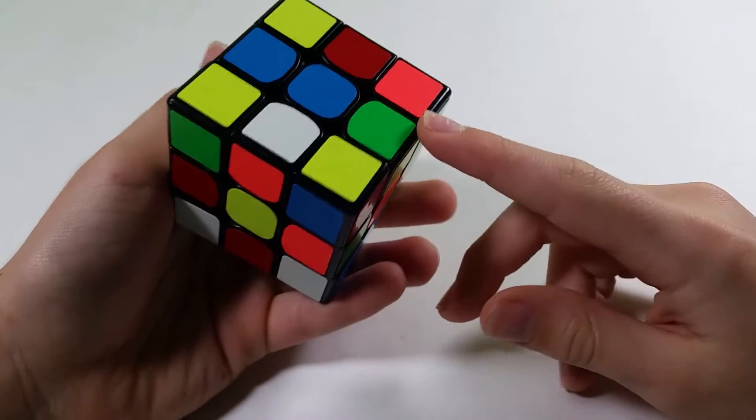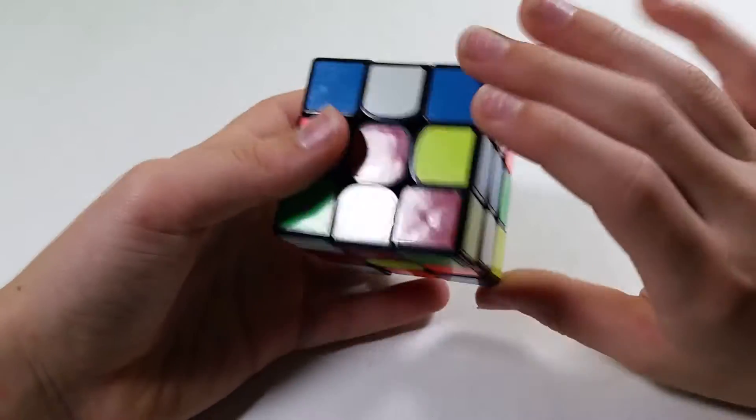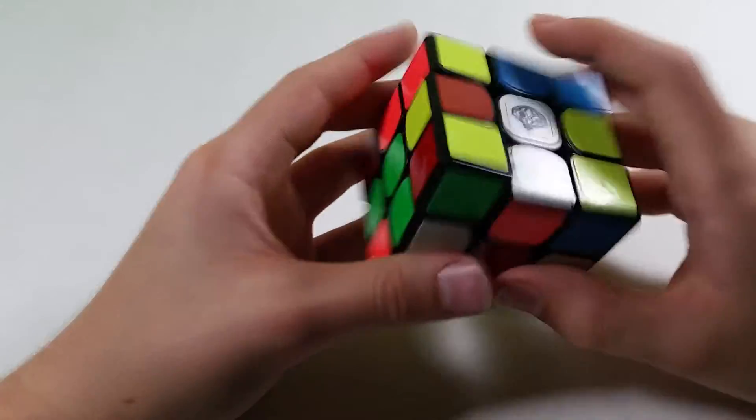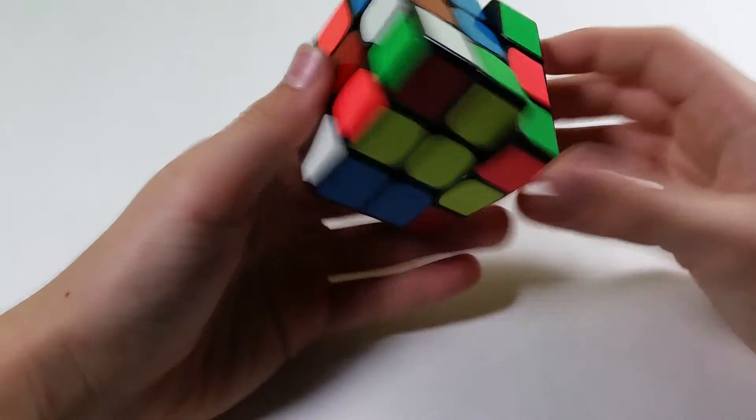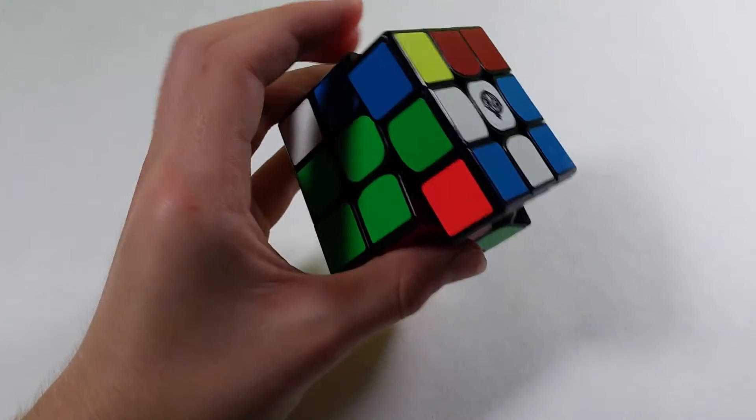You can solve it by bringing these two down opposite of their center with R, F', inserting this edge in the back like that, then do a D2 to align those three, and an R2 to finish off the cross.